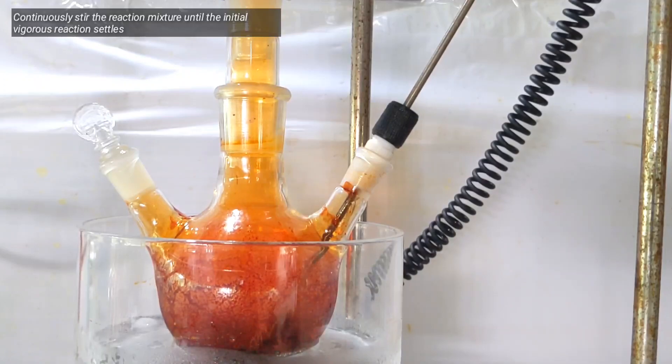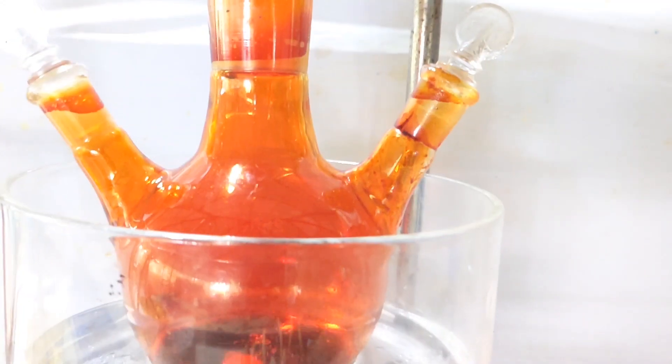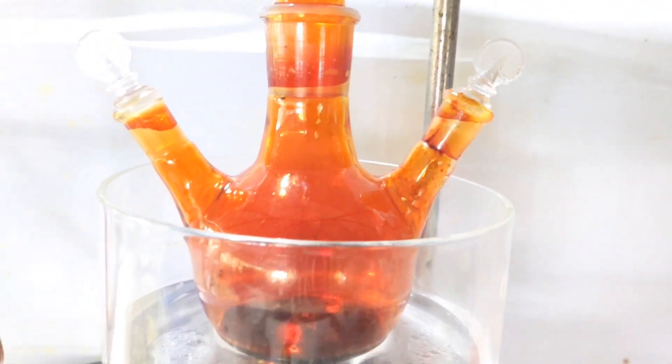Once the vigorous reaction settles down, slowly increase the temperature to around 60-70 degrees Celsius and maintain for around 40-45 minutes. Most of the unreacted bromine will now be removed.